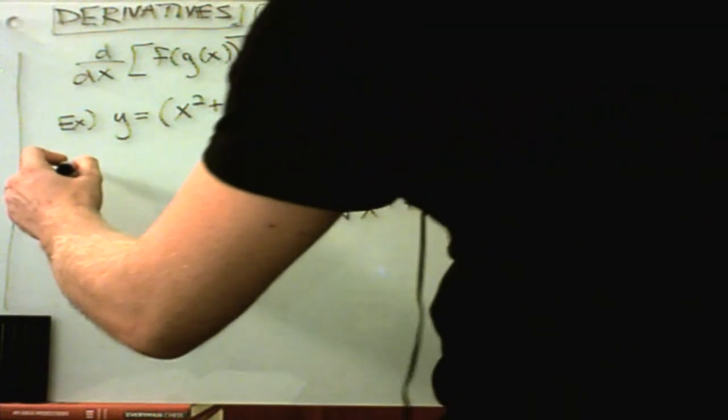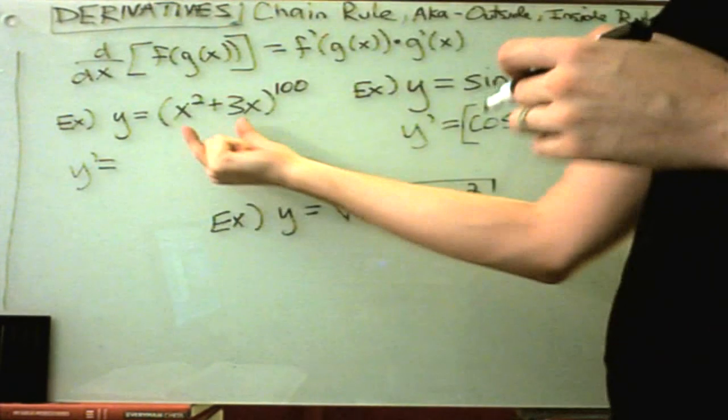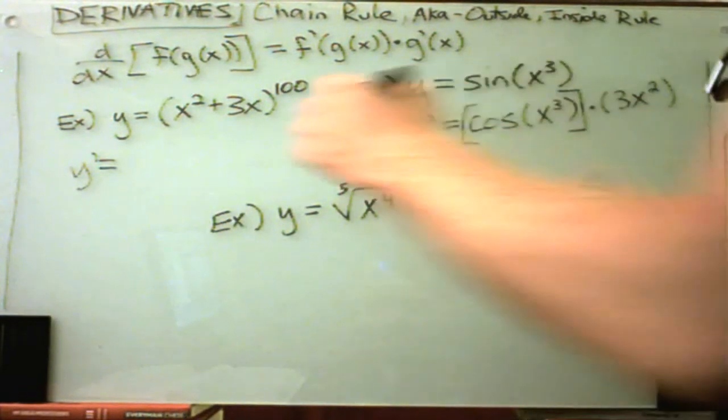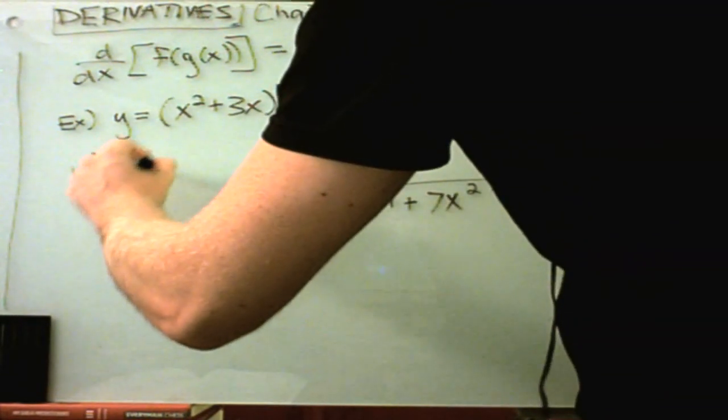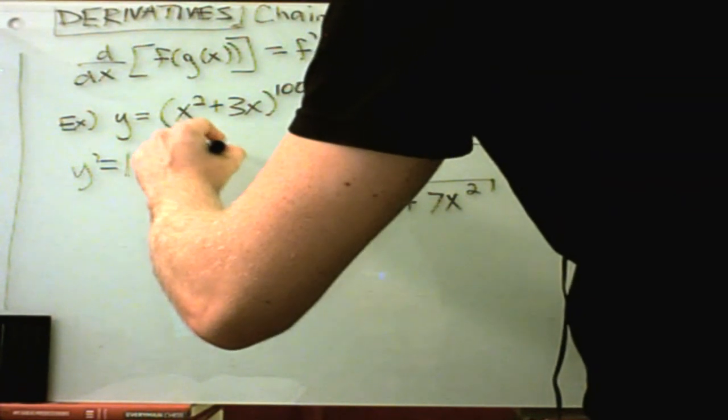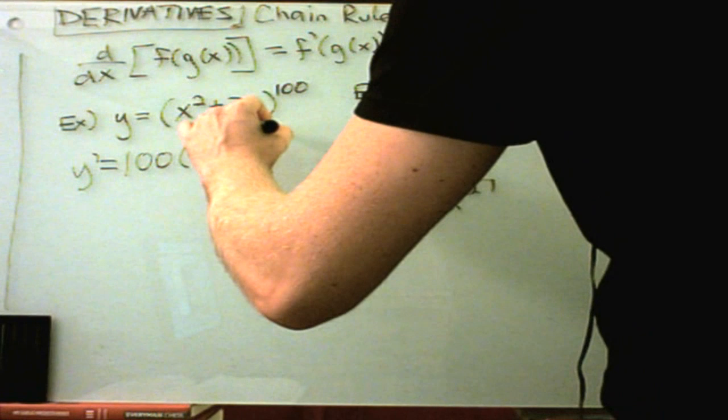Same thing over here. If it was just plain old x to the 100 power, the 100 would move out front. And that's exactly what happens in this case. And again, we leave the inside term alone. We take one away from the power, just like normal.